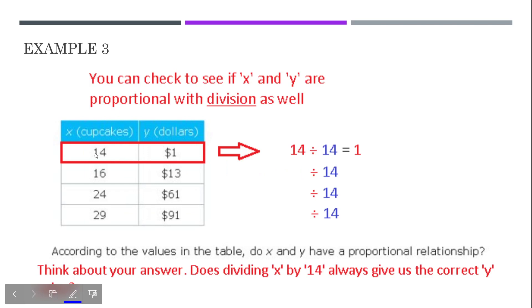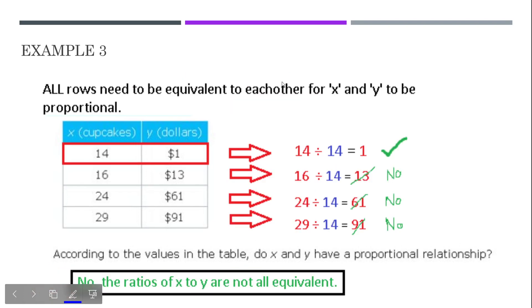And, I have that on the next slide, the next two slides. So, we have to see if, we saw in the first row, we know 14 divided by 14 gives us 1. If this is proportional, then every row, we should get the same thing when we divide by 14. This should, all the numbers should check out. Well, let's try that. Okay. So, the first row obviously worked. But, the second row, 16 divided by 14, that's not 13. 24 divided by 14, that's not 61. 29 divided by 14, that's not 91.